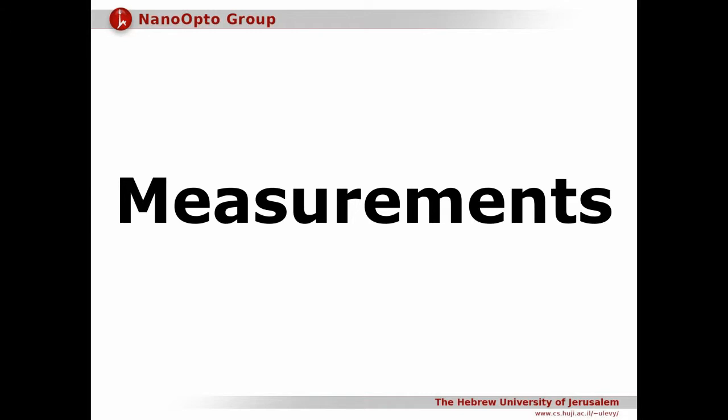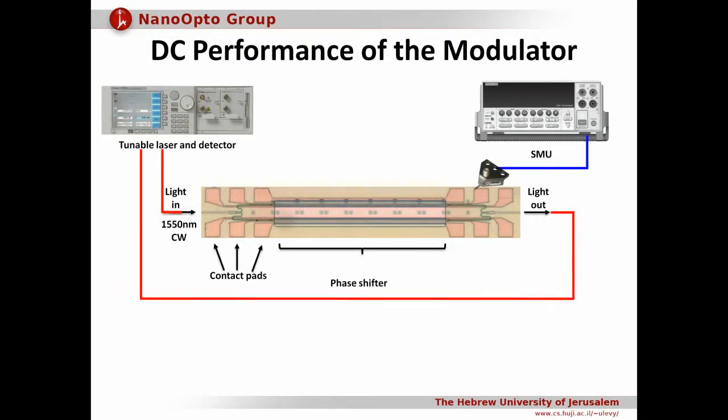The optical input of the device was connected to the laser and the optical output of the device was connected to the optical detector using tapered fibers and butt coupling configuration. The electrodes of the phase shifter were connected to the voltage source. In this configuration, we measure the current voltage characteristic and the optical transmission of the device under different applied voltages.